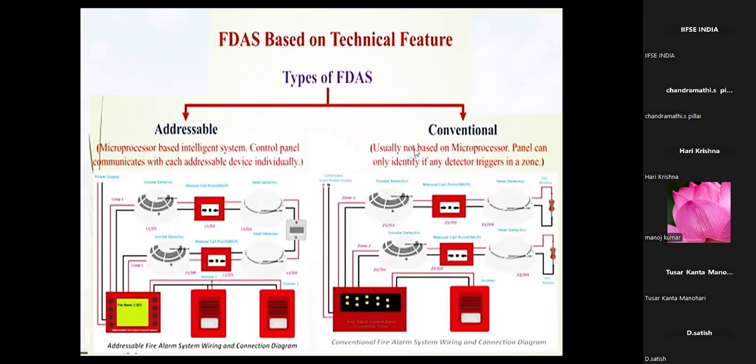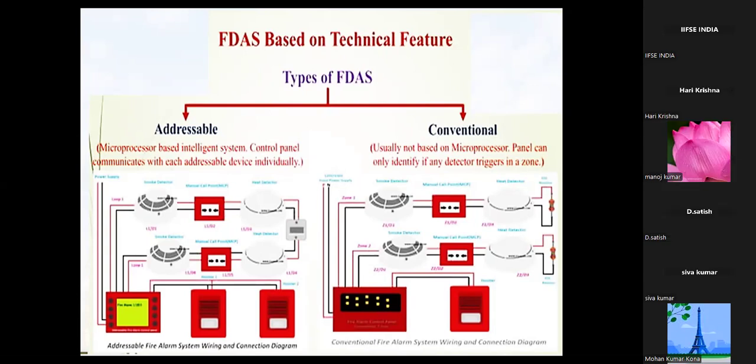What we see in most banks, restaurants, and other systems, these are usually not based on microprocessors, but they have a panel and can be detected by zones. In this system without microprocessors, the fire fighting system is divided into zones.